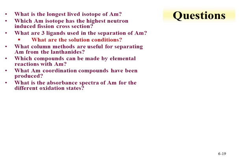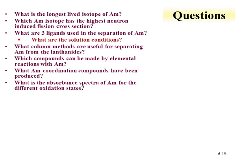Some questions to answer based on these lectures: The longest-lived isotope of americium is americium-243, which is the easier one for chemistry, though americium-241 is easier to obtain. The americium isotope with the highest neutron-induced fission cross-section — looking for an even-A isotope — is americium-242m, with a cross-section of around 7,000 barns. Three ligands used in separation of americium include tributyl phosphate, amines, CMPO, and HDEHP, generally in acidic aqueous phases with the ligand dissolved in an organic phase.